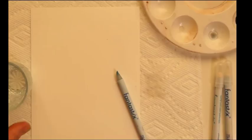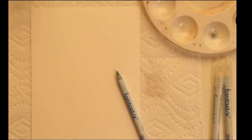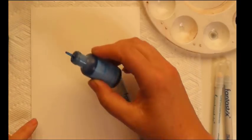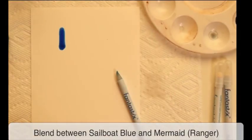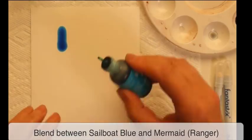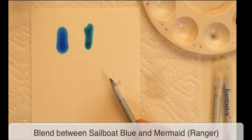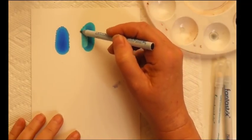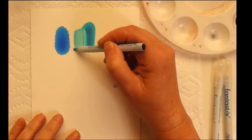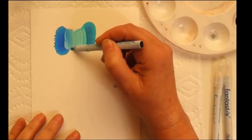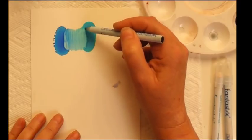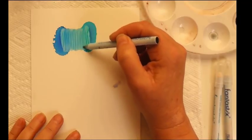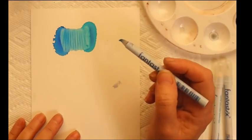The first thing I want to do is put down two colors and then use the Fantastix to blend between them. So this is a little bit of Sailboat and here's some Mermaid. Then we'll use the Fantastix to take the ink and move it this way and take the Sailboat and blend it back and forth. You'll see it will move some color, but you can get a real nice blend between them.